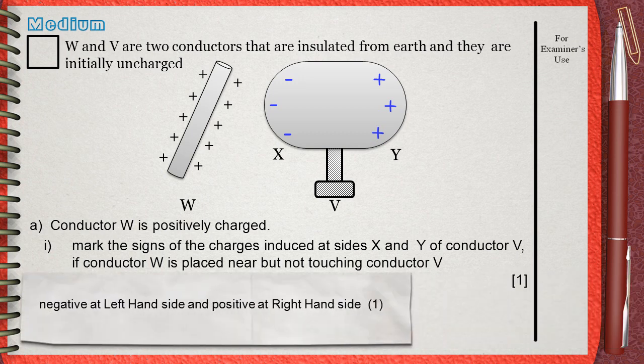The mark scheme awards one mark for this answer: negative at left hand side and positive at right hand side. Another thing I want to say: the number of negative signs on side X must equal the number of positive signs on side Y.